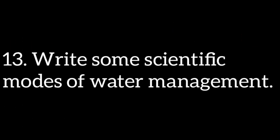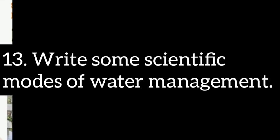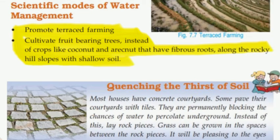Next question: Write some scientific modes of water management. We will promote terrace farming. Cultivate fruit-bearing trees instead of crops like coconuts and arachnets that have fibrous roots, along the rocky hill slopes with shallow soil.